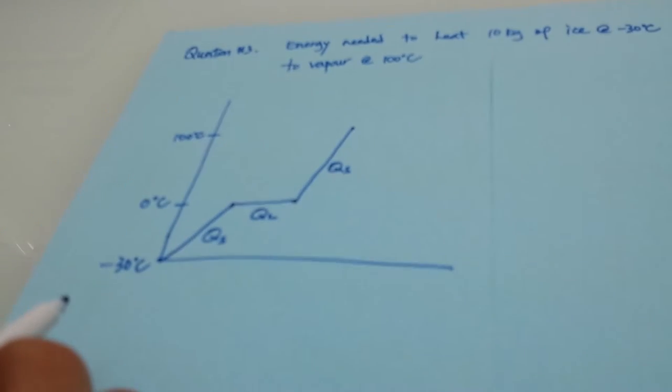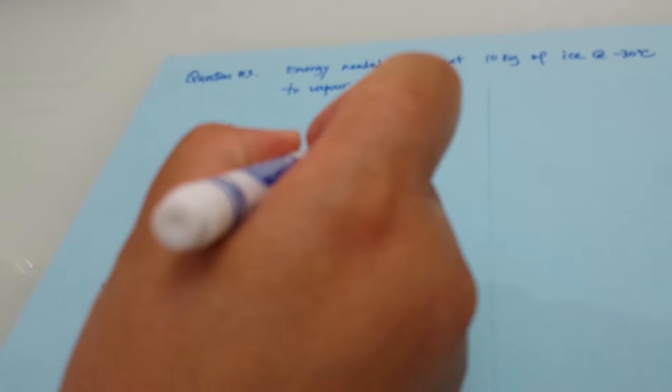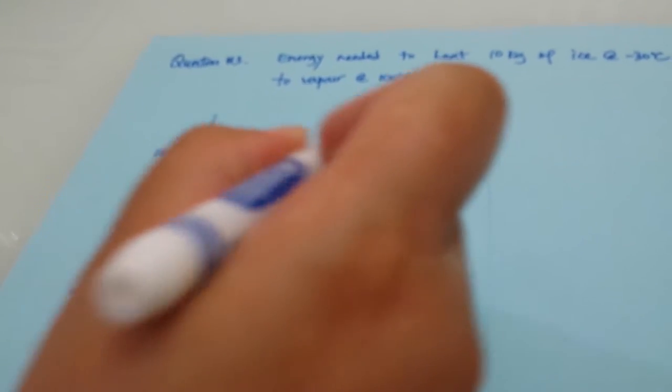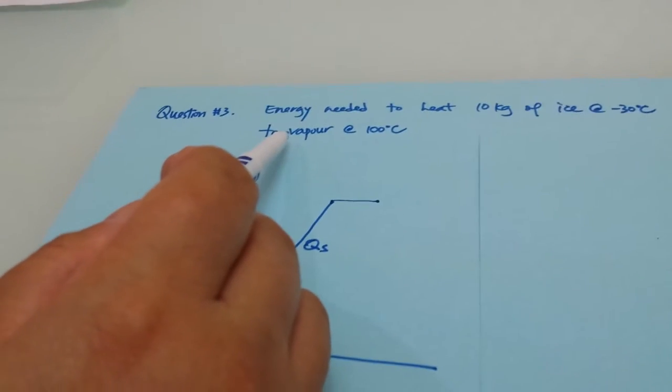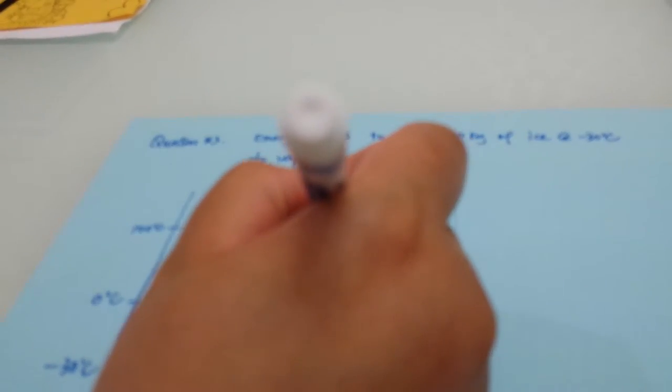And from 100 degrees Celsius, where this is now liquid water, we have to add additional heat so they can all become vapor at 100 degrees Celsius. So we will stop here at 100 degrees Celsius. And that's all that we are trying to calculate.